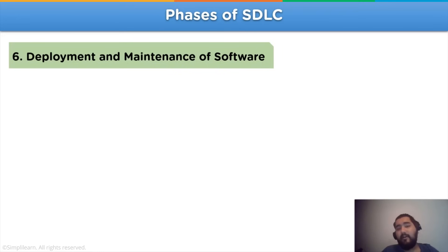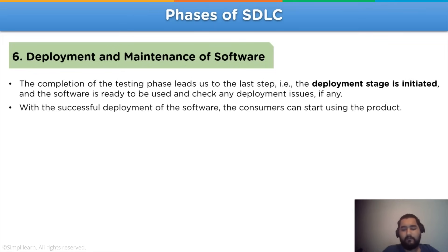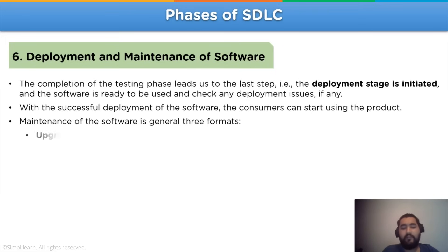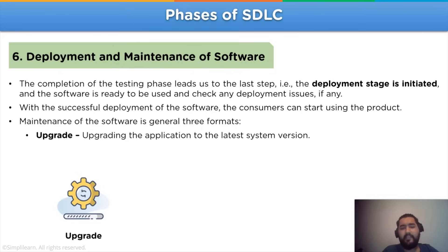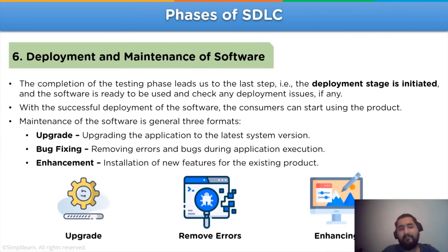Now let's move on to the last heading in the phases of SDLC: deployment and maintenance of software. After the completion of the testing phase, the last step is to deploy the completed product in the market, which is to be used by users, checking for any issues that may arise. With regard to the maintenance of the software, there are generally three formats: the first is upgrade, that is upgrading the application to the latest system version; then bug fixing, that is removing errors or bugs that arise during execution; and finally enhancement, meaning installation of new features for the existing product.